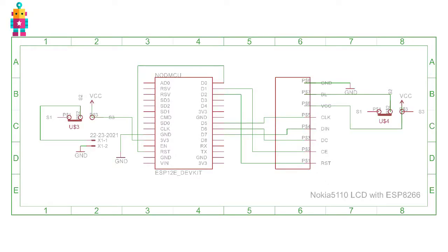This is my circuit diagram. I am using a Nokia 5110 LCD display and a NodeMCU ESP8266 development board. If you want to use a different type of LCD display, you can, but the connection will be a little bit different. If you want to use the same components I am using, go through the description — I have put the link from where you can purchase them.